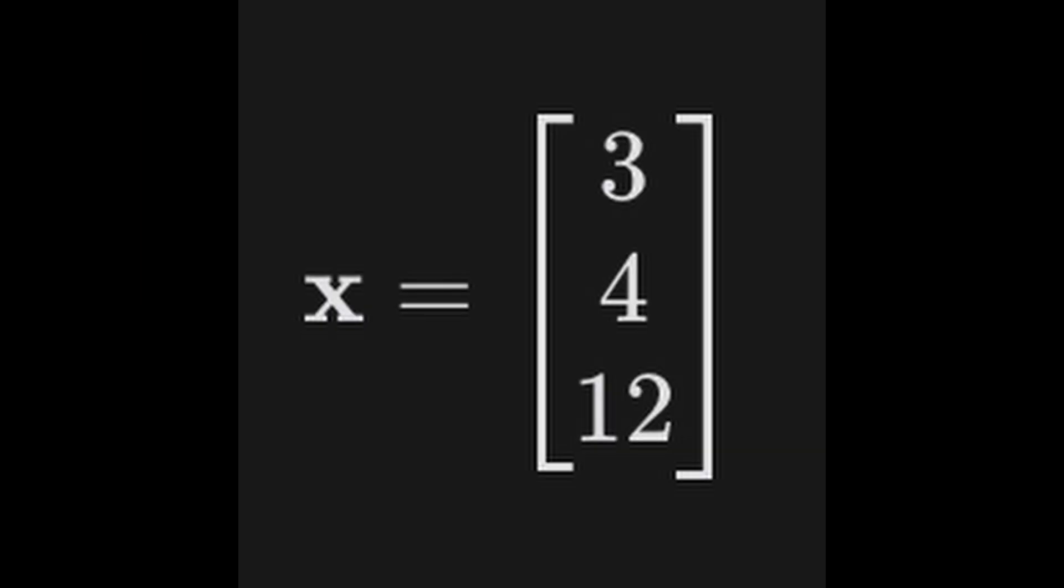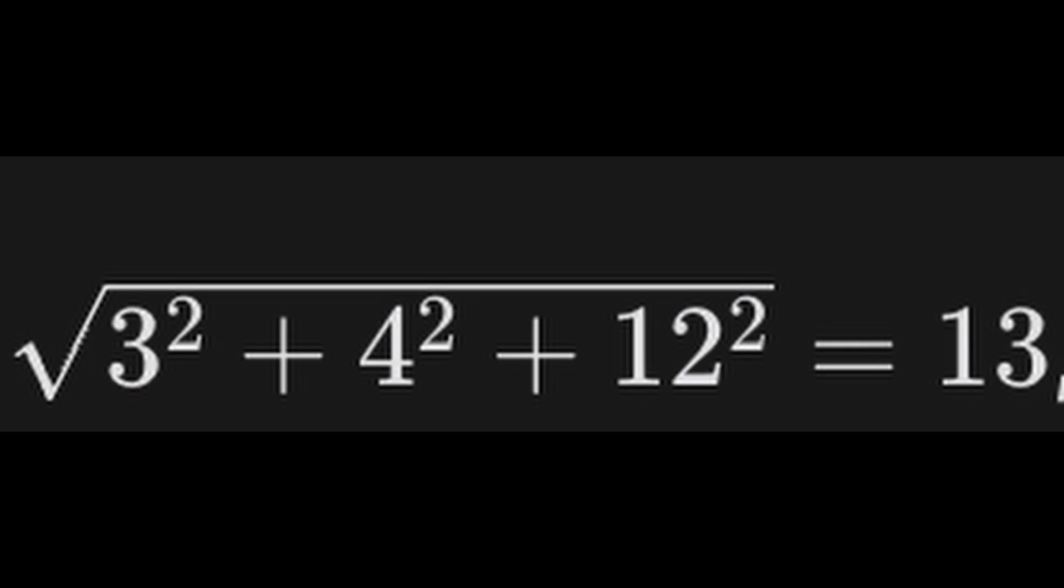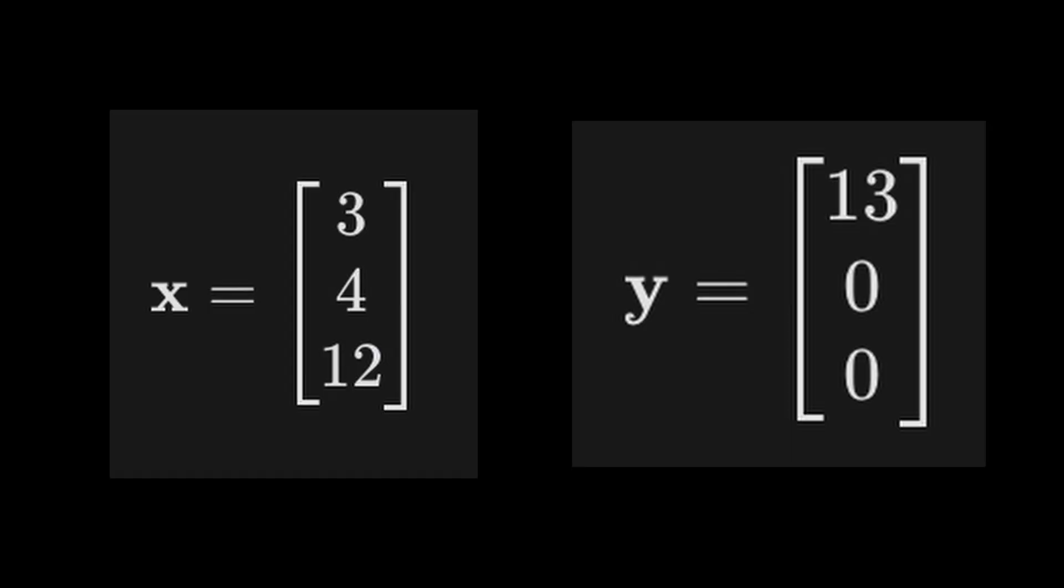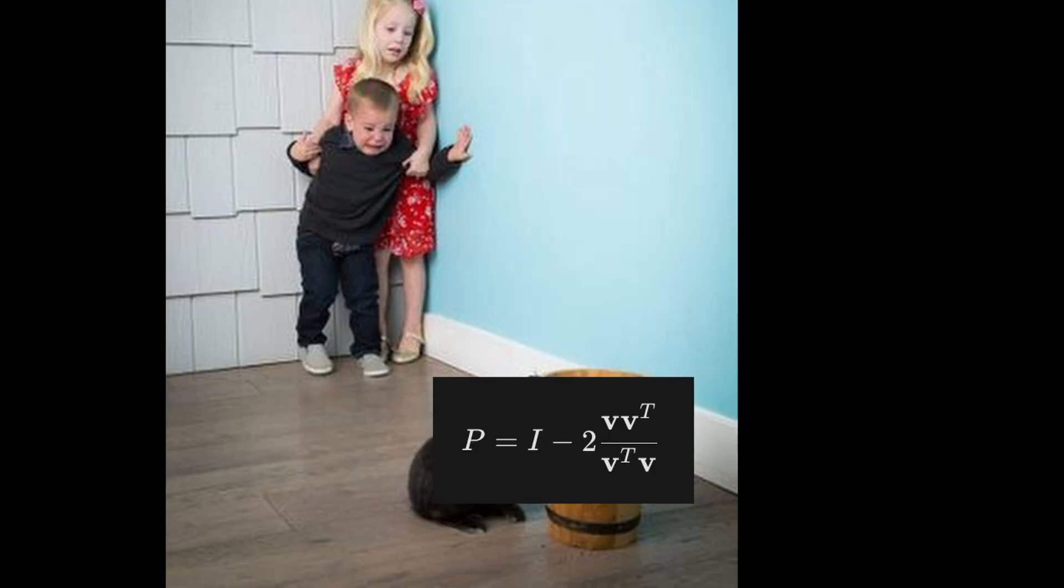Let's say you have a vector and the length of that vector is, let's say, 13. So you want to rotate that vector so its length is again 13, but it's just pointing in a different direction.